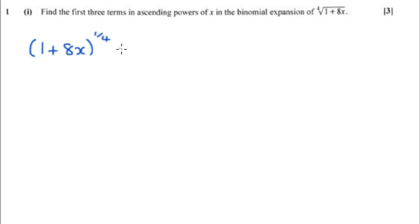our formula for binomial expansions which says it's going to be 1 plus nx where n is the power and x is this term here. So that's going to be a quarter of 8x plus n, a quarter again,